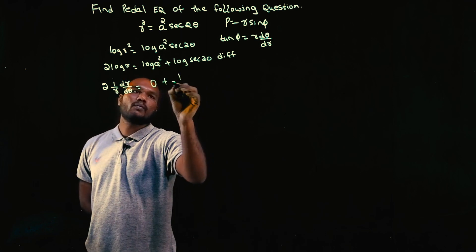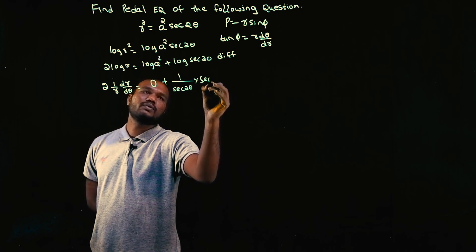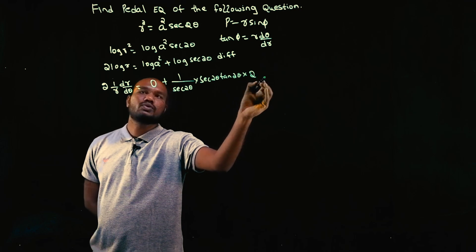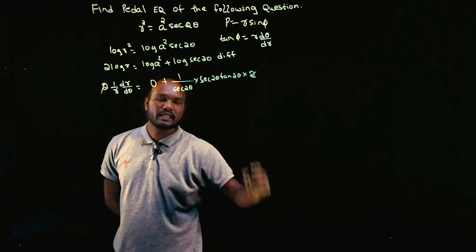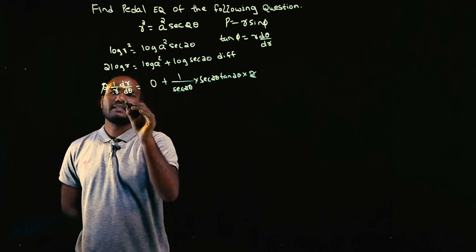This 2, this 2, these terms get cancelled. The sec²θ terms also cancel. So 1/r × dr/dθ = tan 2θ.